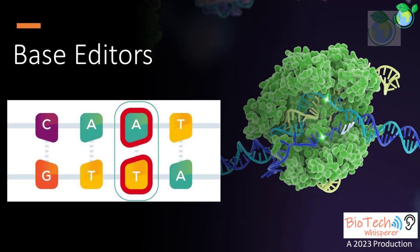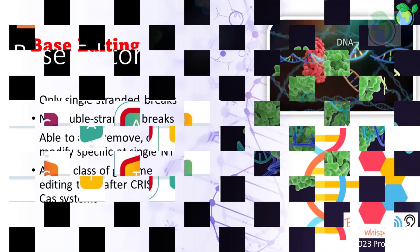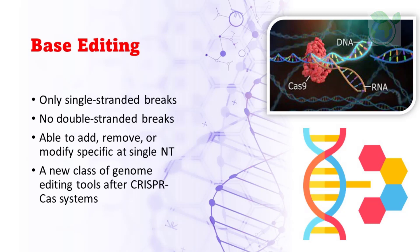Base editors are a newer class of genome editing tools that allow scientists to make precise changes to the DNA sequence at a single base level. They work by using a combination of enzymes and guide RNAs to convert one specific base to another without cutting the DNA strand. Unlike traditional genome editing methods such as CRISPR-Cas9, which introduce double-stranded breaks in the DNA, base editors introduce only single-stranded breaks, which leads to less DNA damage.